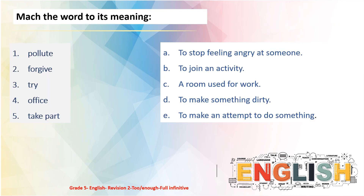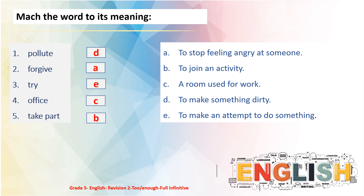Now let's practice — match the word to its meaning. You can stop the video and do the task. Let's check your answers: one — 'pollute' means D, to make something dirty. Two — 'forgive' means A, to stop feeling angry at someone. Three — 'try' means E, to make an attempt to do something. Four — 'office' means C, a room used for work. Five — 'take part' means B, to join an activity.